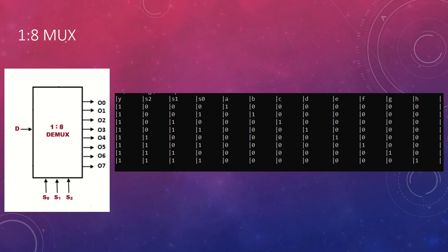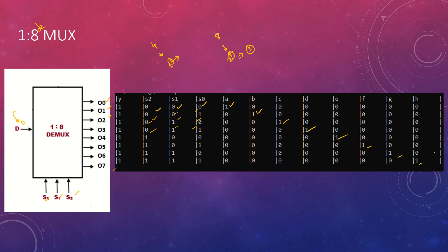Now let's understand how the 1-to-8 DMUX works. We have one data input and eight output lines: O0, O1, O2, O3, and so on. We need three select lines because 2 to the power of 3 equals 8 — so S0, S1, and S2. The truth table is simple: 000 enables O0, 001 enables O1, 010 enables O2, 011 enables O3, and so on.